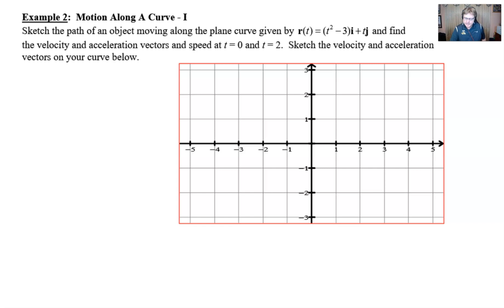We're still amidst all of our motion along the curve problems, and our example 2 is going to look a little bit like example 1, except everything is going to be all consolidated together in one question. Let's take a look. The directions say sketch the path of an object that moves along this plane curve given by r(t) = (t² - 3)i + tj.